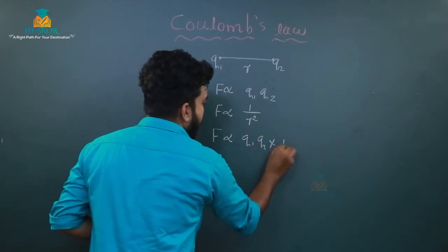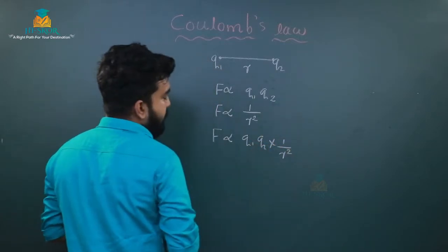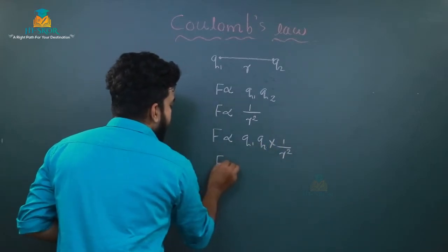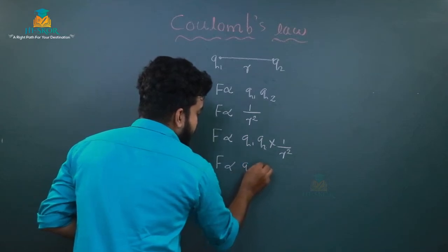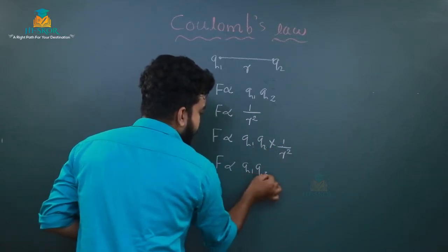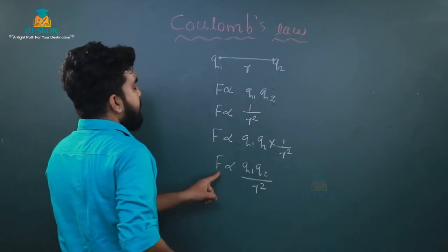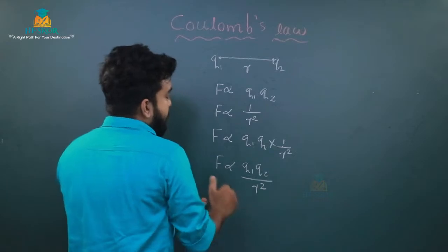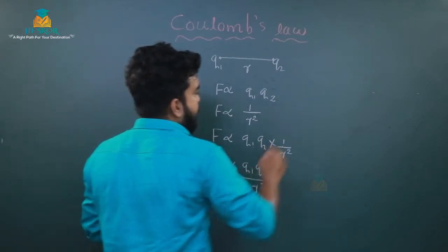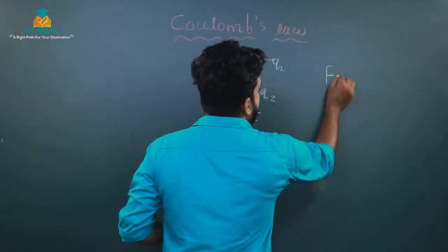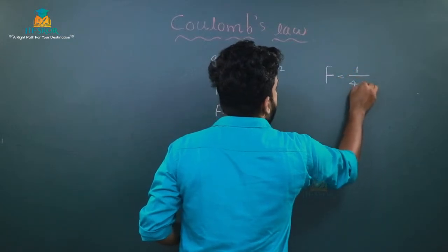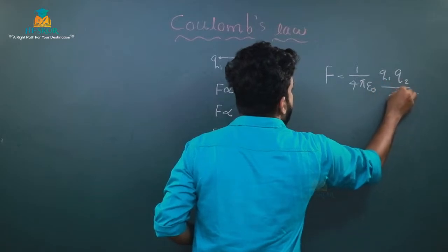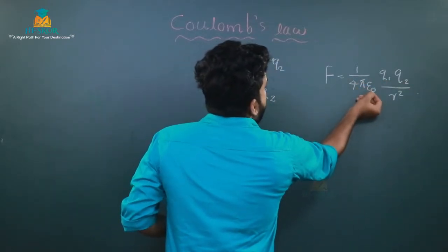Combining these, we can write F is proportional to q1 q2 divided by r square. We convert this proportional relation into an equation by adding a proportionality constant, that is 1 by 4 pi epsilon 0, giving F equals 1 by 4 pi epsilon 0 into q1 q2 by r square.